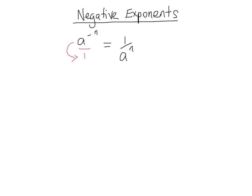Let's look at another example before we see why it works. If I had 4a to the negative n, we're only moving the part with the negative exponent down, so that would actually be equal to 4 over a to the n.